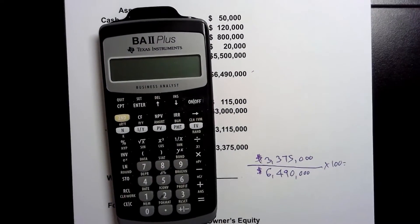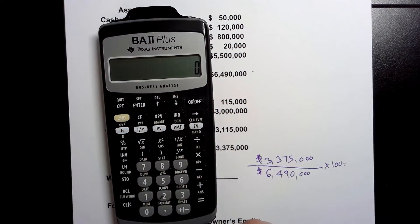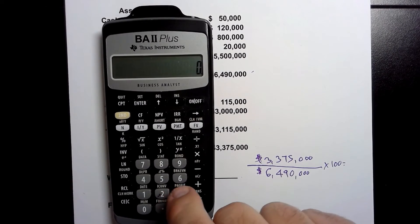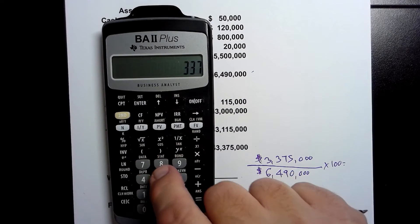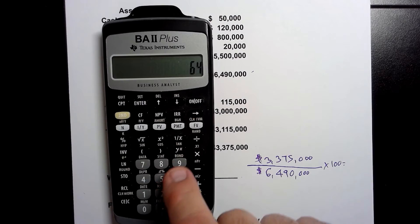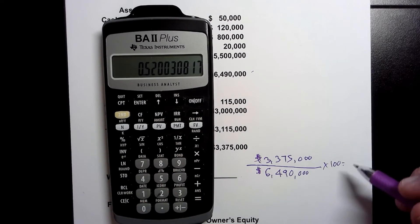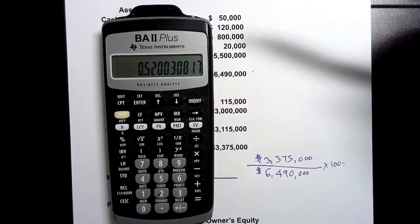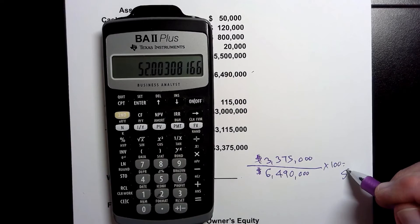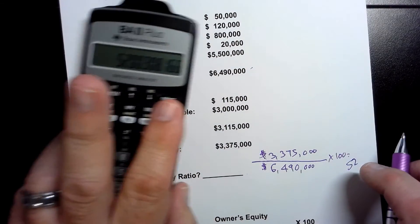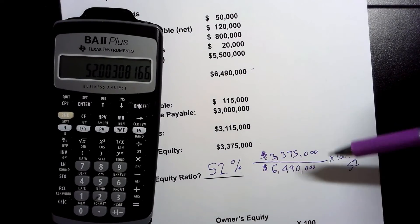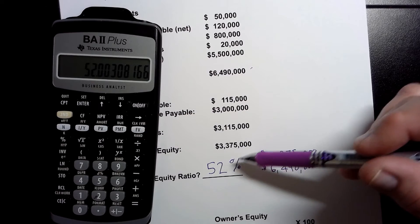I'm going to use my BA II Plus calculator — if you want a good financial calculator such as this one by Texas Instruments, I've linked some down below in the description. We're going to put in the numerator first: $3,375,000, and divide by the denominator, which is $6,490,000. That gives us 0.5200. We will now multiply this by 100, and that gives us 52.00%. So our equity ratio is 52%.